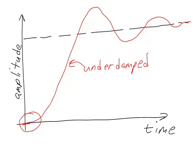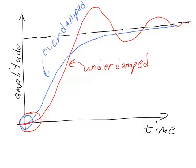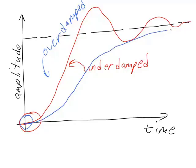An overdamped second order step response actually on the surface looks very similar to a first order response. However, you can tell it is not a first order response by looking at the slope at time equals zero — since the slope starts out at zero, a flat line, we can tell this is actually an overdamped second order step response. The overdamped case will always be slower than the underdamped case.